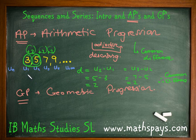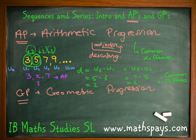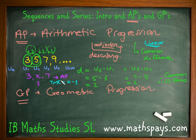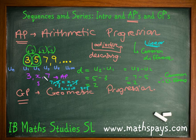For harder questions, you might be given something like 3, X, 7 and told it's an AP — find the common difference. You can probably see X is 5, but algebraically: 7 minus X must equal X minus 3, forming a linear equation. Adding X and 3 to both sides gives 2X equals 10, so X equals 5. You could also say 7 minus 3 equals 4, divided by 2 gives a difference of 2, so add 2 to get 5. There are lots of different ways to do this.